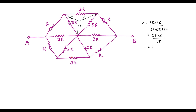We will try to convert that also into star fashion. The equivalent star will appear like this. Here also the value of these resistors are R — this is also R, this is also R.